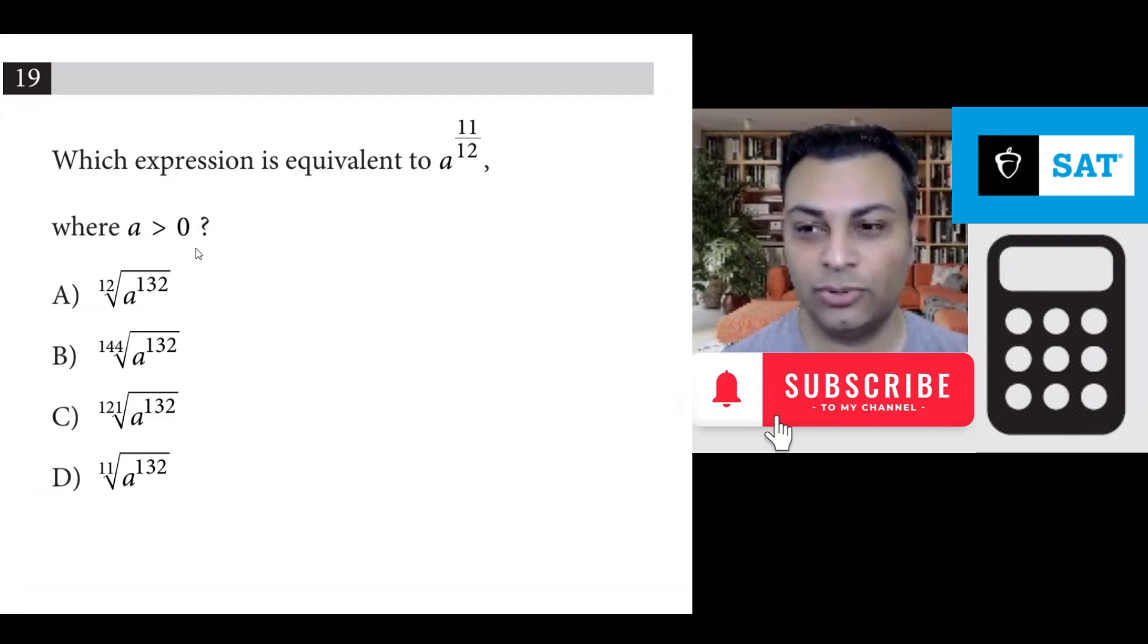Okay, so one thing we note about exponents is that when you have something to the power of m over n, this can be rewritten with a radical as the nth root of x to the m.